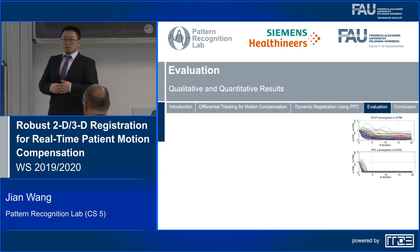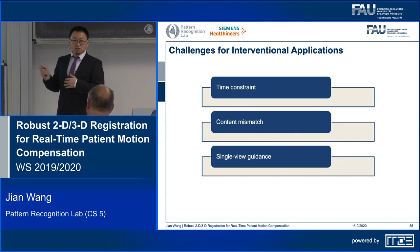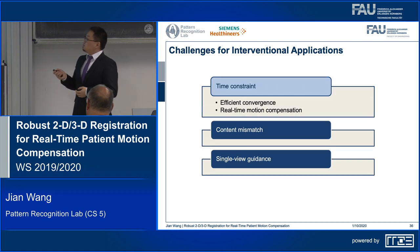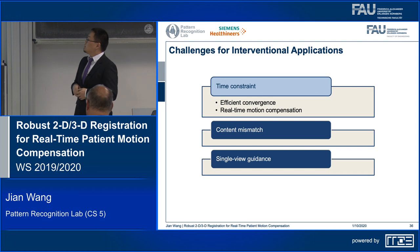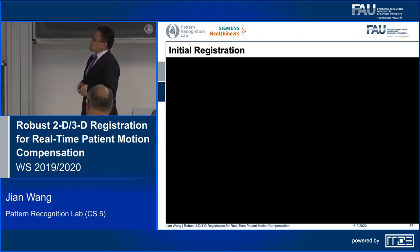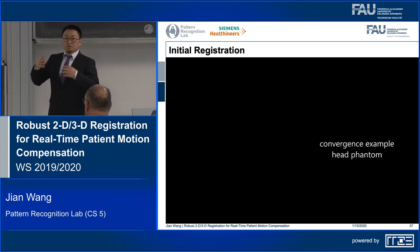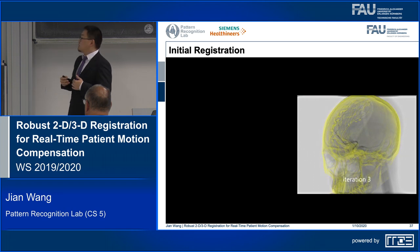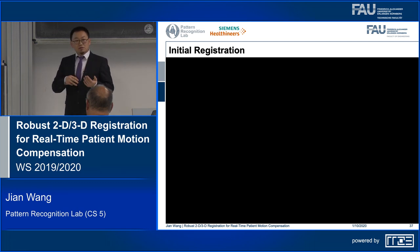Now I would like to show some evaluations and results, addressing the challenges for intervention applications. To address the time constraint problem, I'll show how the PPC-based registration efficiently converges and how it performs for the motion compensation scenario. Here we have two examples showing intermediate steps of the registration for thorax and head phantoms, where the 3D motion can be efficiently estimated for both in-plane and out-of-plane rotation. We only need four iterations and seven iterations to get to an accurate overlay, which is very efficient compared to conventional methods that take hundreds of iterations.